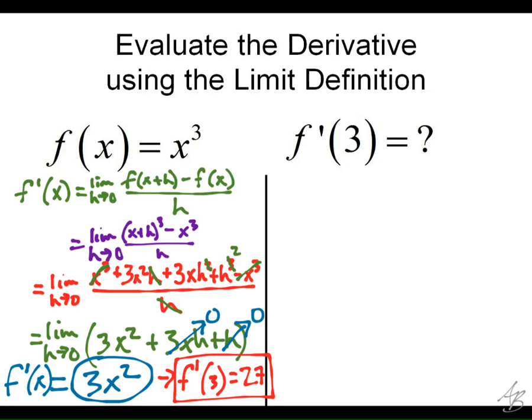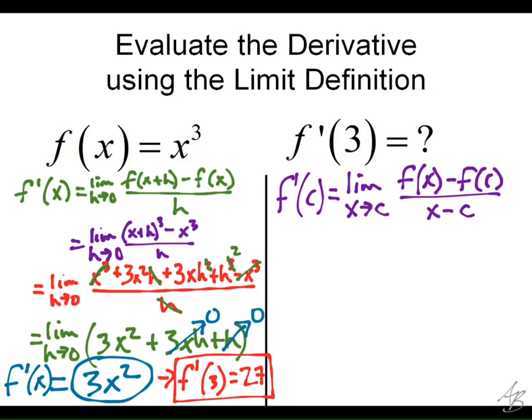Okay, now, let's use that other definition. Most of you, I think, wrote it down, but I'll write it here. So, we've got the limit as x approaches c. Let me do this. f prime of c equals limit as x approaches c of f of x minus f of c over x minus c. So, for this particular problem, we want to know what f prime of 3 is. So, we're going to take the limit as x approaches 3 of f of x, which is x cubed. X cubed. Minus f of 3, which is 27, over x minus 3.